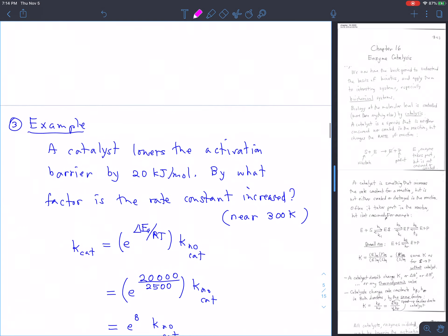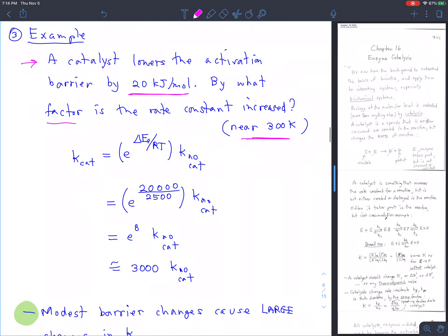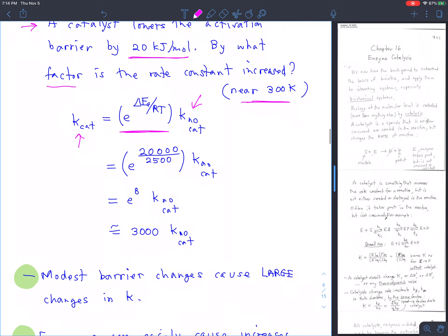All right. So let's do an example then. A catalyst lowers the activation barrier by 20 kilojoules per mole. By what factor alpha is the rate constant increased? And let's suppose that we're near 300 Kelvin, because it does depend on what the temperature is. Well, we saw above that the catalyzed rate constant is the uncatalyzed rate constant times this factor, e to the delta Ea over RT. Delta Ea is 20 kilojoules per mole. So we put 20,000 in there. We're near 300 K, so we'll put 2500 as the value for RT.